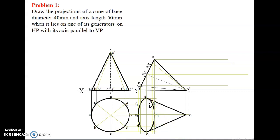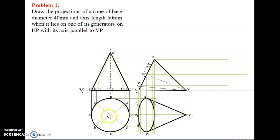Mark the coinciding points. This A and this A will meet at a point — mark that as A1. B and B will meet — mark as B1. C and C intersect at C1. Same for D1, E1. F and F meet at F1. G and G meet at G1. H and H meet at H1. O, O, and O will meet — mark that as O1.